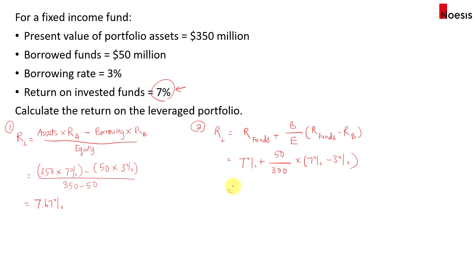If we calculate the second term here, we get 0.67%, which shows that the incremental return from using leverage is 0.67%. And if you add it up, you get 7.67%. That's how you can use both methods to calculate the return on the leveraged portfolio.